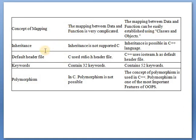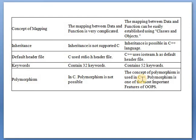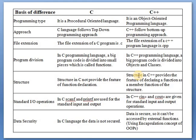Encapsulation: C does not support encapsulation (wrapping of data and functions in a single entity); in C++, data and functions are encapsulated together as an object and as a class. Information hiding: not present in C, but present in C++. Data types: C++ supports built-in as well as user-defined data types (that is a class). Global variables: C allows multiple declarations of global variables; C++ does not. Mapping of data and function in C is complicated because it is not encapsulated; in C++ it is not complicated because it is encapsulated in the form of class and object. Inheritance: no concept of inheritance in C, but C++ supports inheritance. Default header file: C uses stdio.h; C++ uses iostream. Keywords: C has 32 keywords, C++ has 52. Polymorphism: not possible in C, but used in C++ through function overloading and operator overloading.